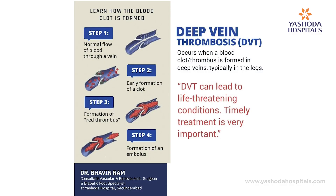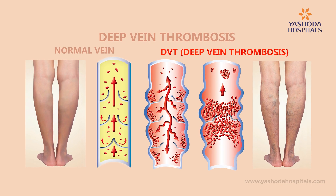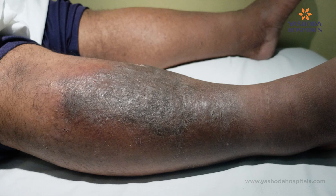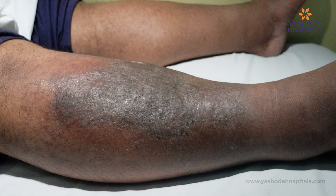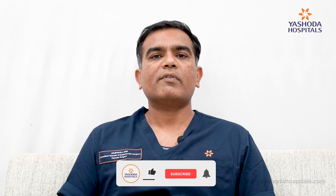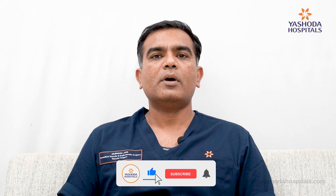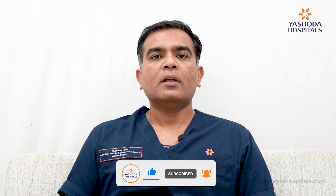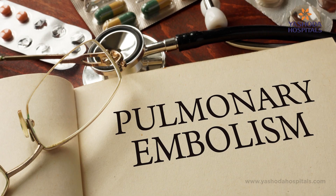Deep vein thrombosis, or commonly known as DVT, is a disease in which a blood clot happens in the venous channels in our body. Most commonly DVT affects the lower limb, but sometimes it can affect the upper limb, abdomen, and other parts of the body also. Sometimes these blood clots can travel from the leg towards the heart and lungs, causing a serious problem commonly known as pulmonary embolism or PE.